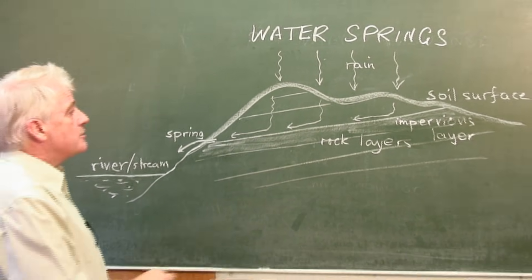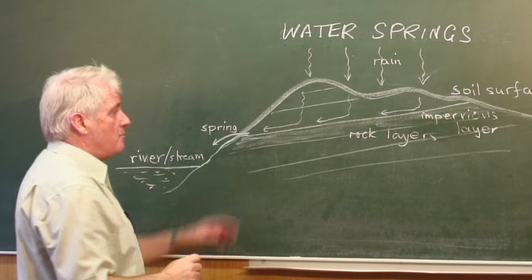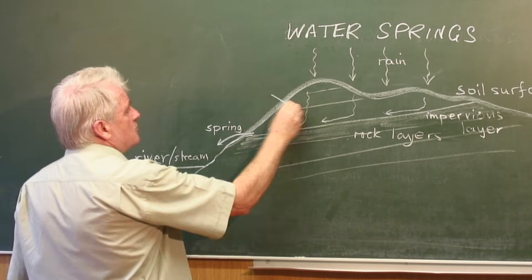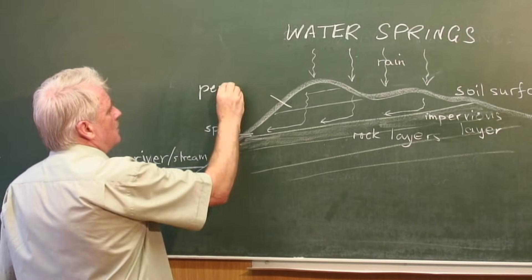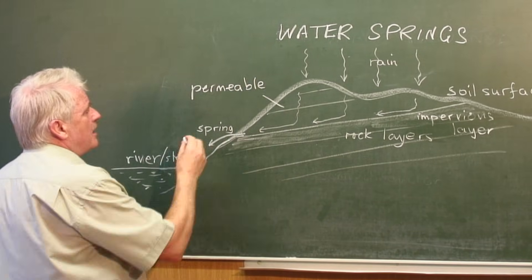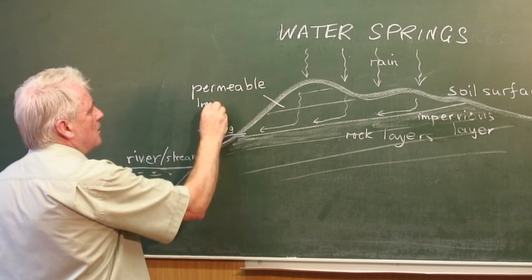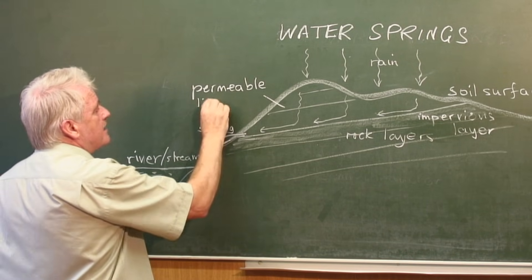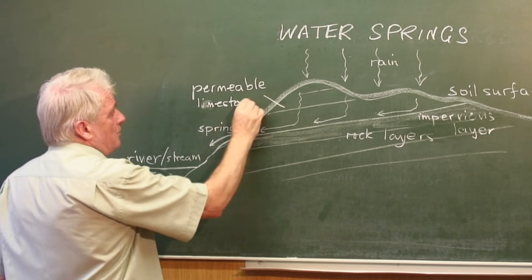So what happens is, in these layers of rock which are permeable, that is, water can go through them. Rocks like limestone and sandstone are permeable rocks.